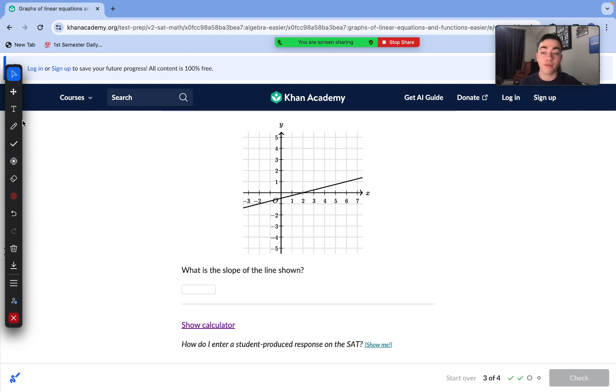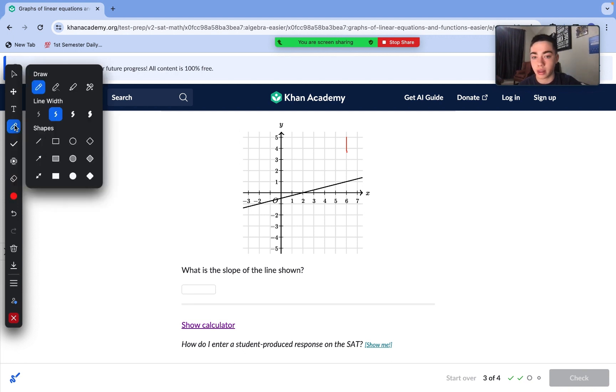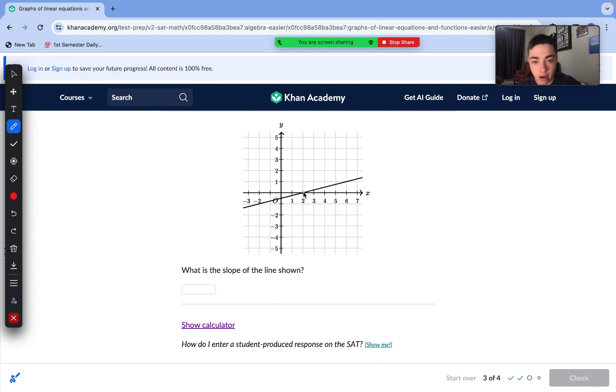On to our next question. Finding slope of a line from a graph. So, here, we just need to take two clear intersections of the line with our little grid marks here. So, those gray grid marks that we're going to be looking for clear intersections. And then, we can do rise over run from those. Okay. So, here's a grid intersection right here. And so, is here.